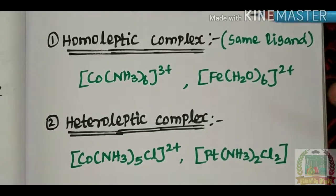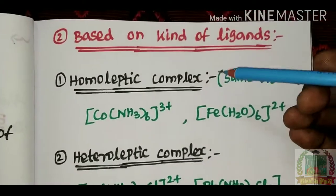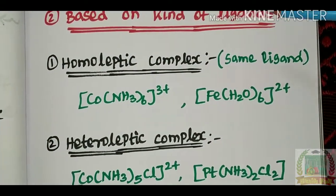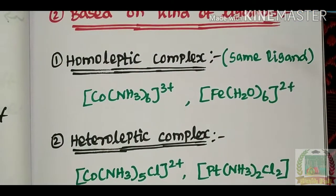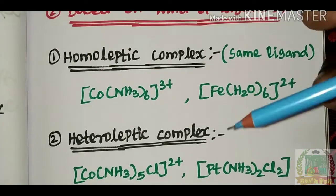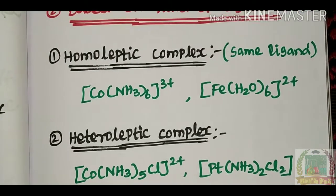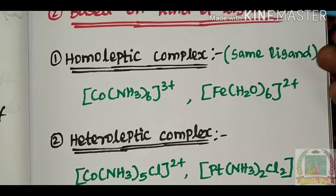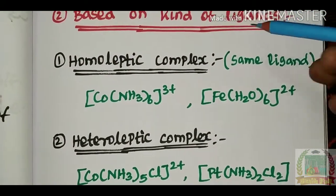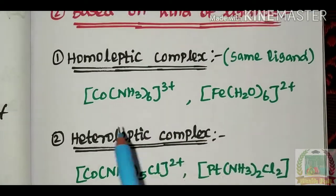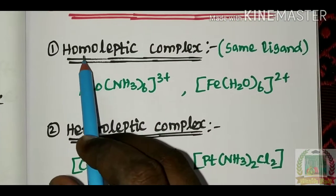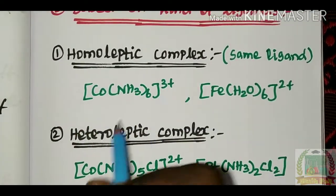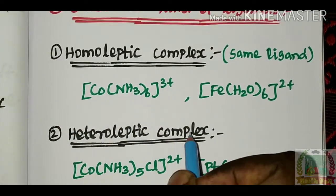The next classification is based on the kind of ligands. Based on the type of ligands present, there are two types of complexes: the homoleptic complex and the heteroleptic complex.